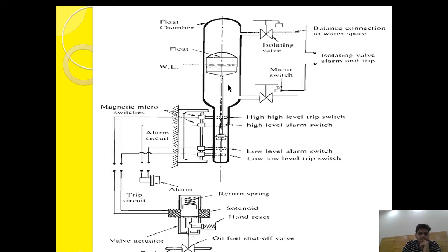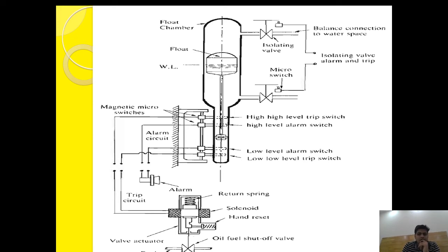The same logic applies when the water level is increasing. The float will move up, and when it reaches the high level alarm switch position, the alarm circuit will be activated through a micro switch, indicating a high water level alarm. If the situation is left unattended and the water level continues to rise, the float moves further up.